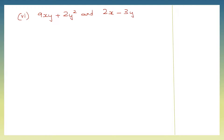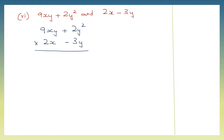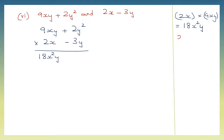Next question — that will be question 6. Here we are going to multiply 9xy plus 2y squared and 2x minus 3y. We'll put it down vertically: 9xy plus 2y squared, and below that into 2x minus 3y. First we're going to multiply 2x into 9xy. First let's multiply the numbers: 2 nines are 18. Then we have x into x which is x to the power of 2, and y. So that makes it 18x squared y.